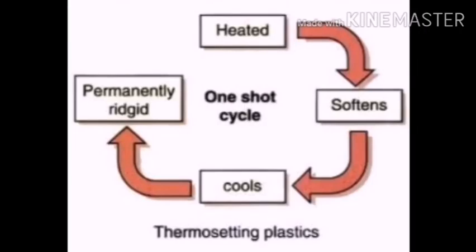The thermosetting plastic cycle: first, we heat it; then the plastic softens; then we cool it down; and it becomes permanently rigid — we cannot change the shape again. This is one complete cycle for thermosetting plastic.